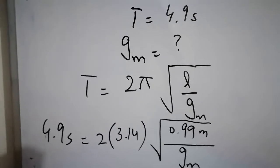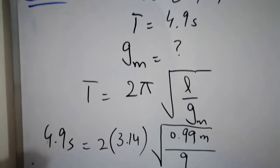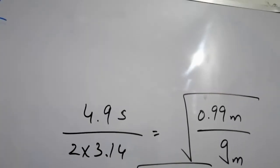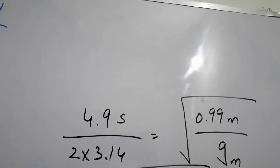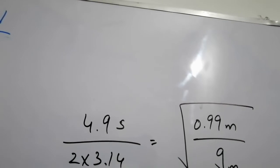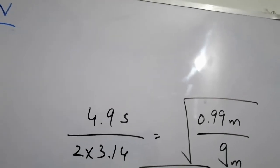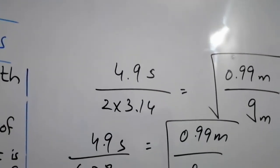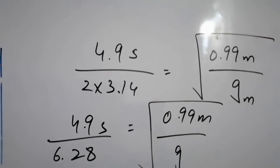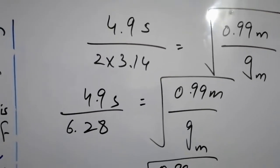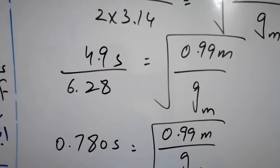So we have to divide by 2 times 3.14. When we multiply 2 and 3.14, we get 6.28. So we divide 4.9 seconds by 6.28, and we get 0.780 seconds.